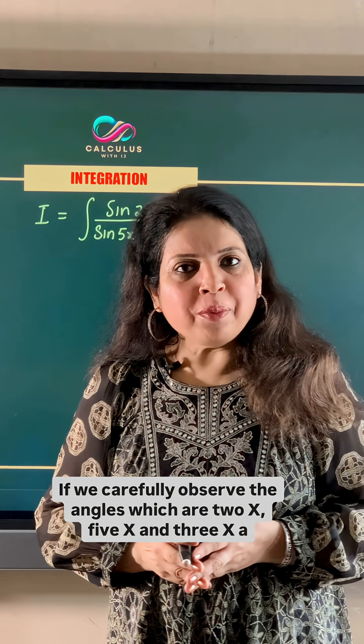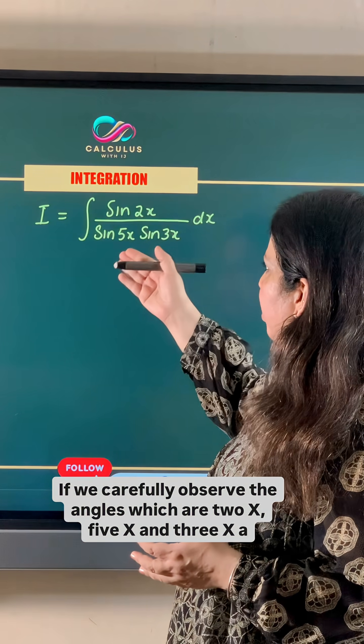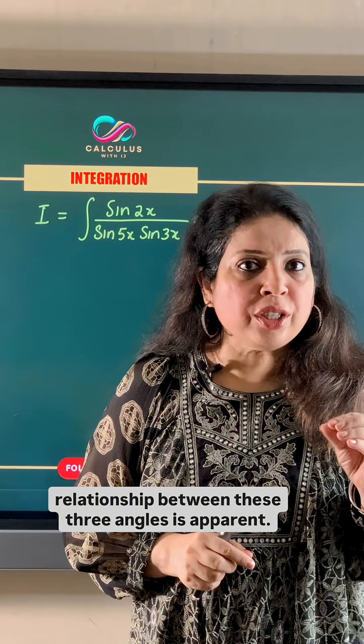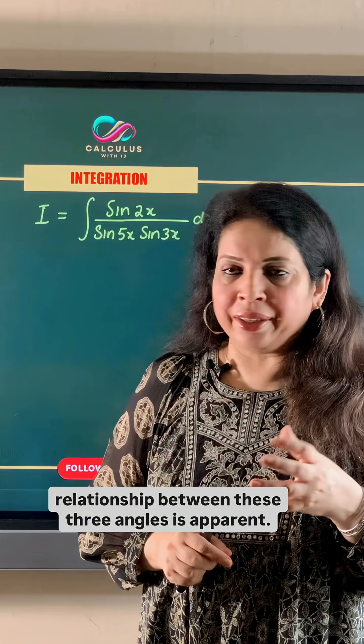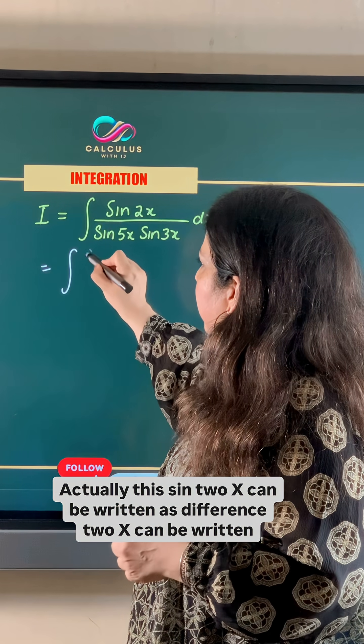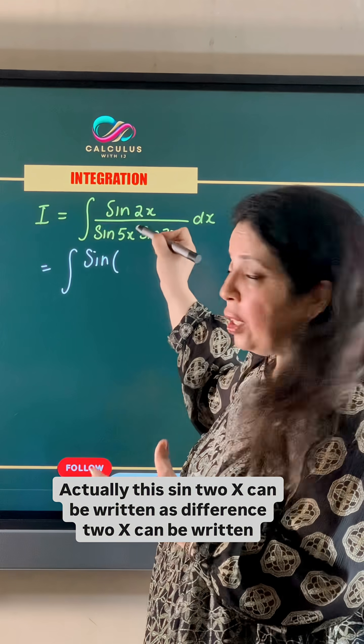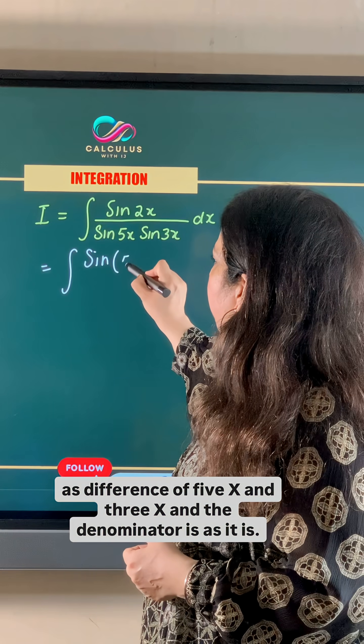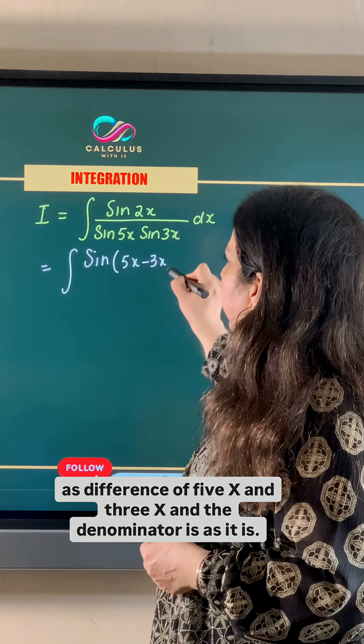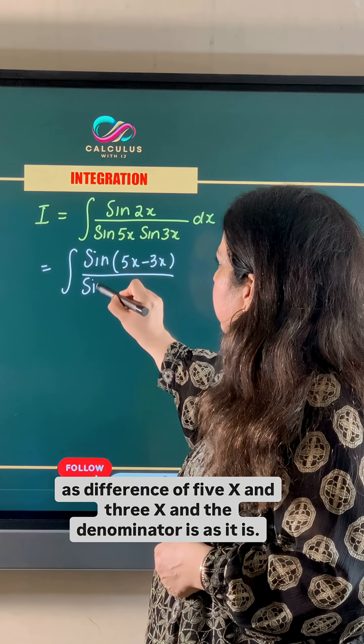If we carefully observe the angles 2x, 5x and 3x, a relationship between these three angles is apparent. Actually, this sine 2x can be written as the difference of 5x and 3x, and the denominator is as it is.